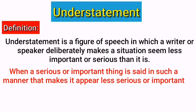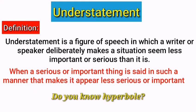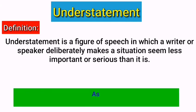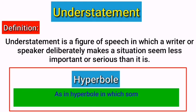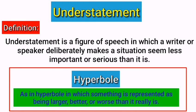I think you are not getting the point, so let me ask you a question — do you know hyperbole? Understatement is the opposite of hyperbole. In hyperbole, something is represented as being larger, better, or worse than it really is. Understatement is the opposite, because in understatement something is made less important or less serious.